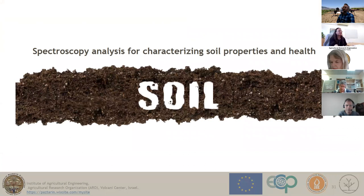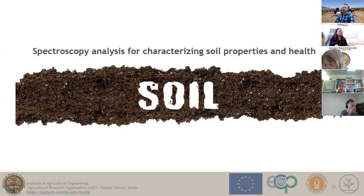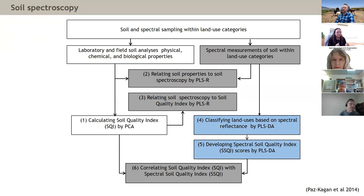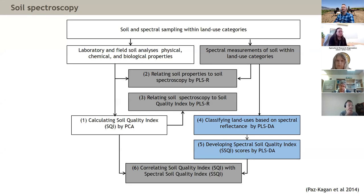Now moving to the remote sensing part. Developing a soil health assessment is highly complicated and expensive, requiring large amounts of soil analysis. This is the rationale for using soil spectroscopy to characterize soil properties and health. We take laboratory and spectral analyses and develop multi-statistical approaches to link the spectral signal to biological, chemical, and physical properties. We use models based on partial least squares regression and discriminant analysis — regression for correlation between properties, discriminant analysis for classifying data — and we develop the overall soil quality index and a spectral soil quality index.